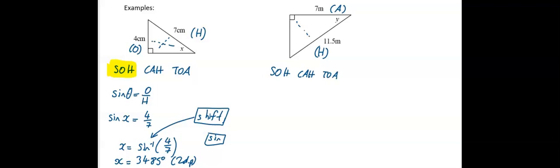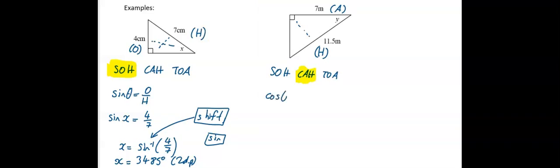We have to decide which ratio to use. We've got A and H. Sine involves O and H; cosine involves A and H — so it is going to be cosine. Write down: cos theta equals A over H. Fill that in: cos of y equals 7 divided by 11.5. Then y equals the inverse of cos, which is cos to the minus one.